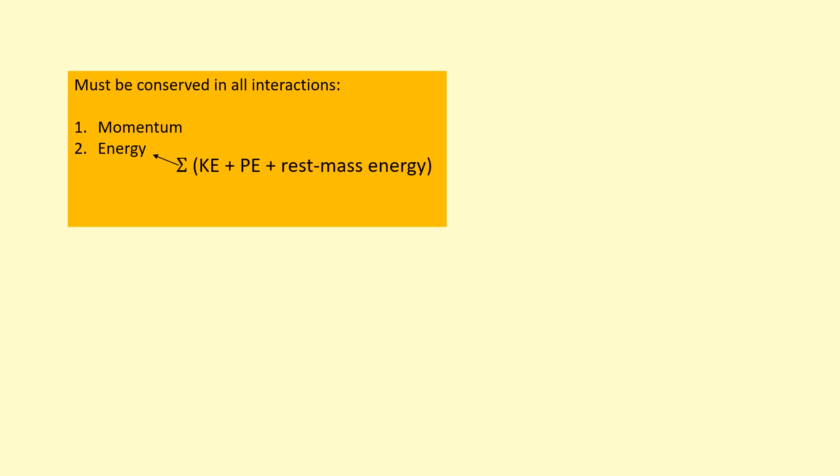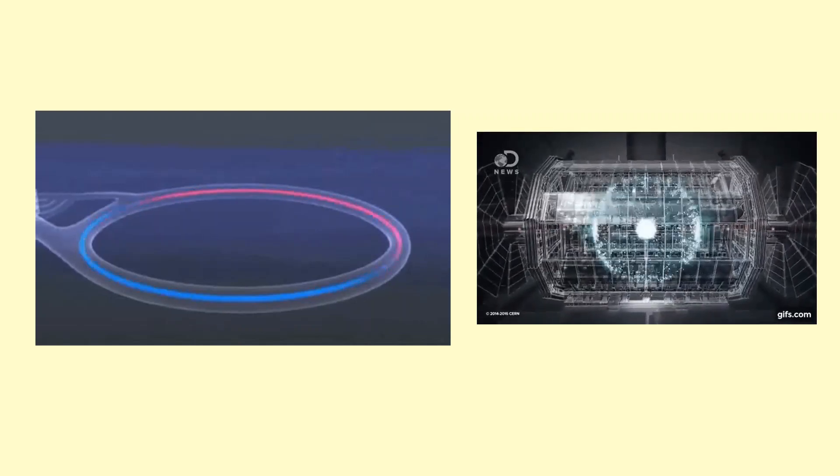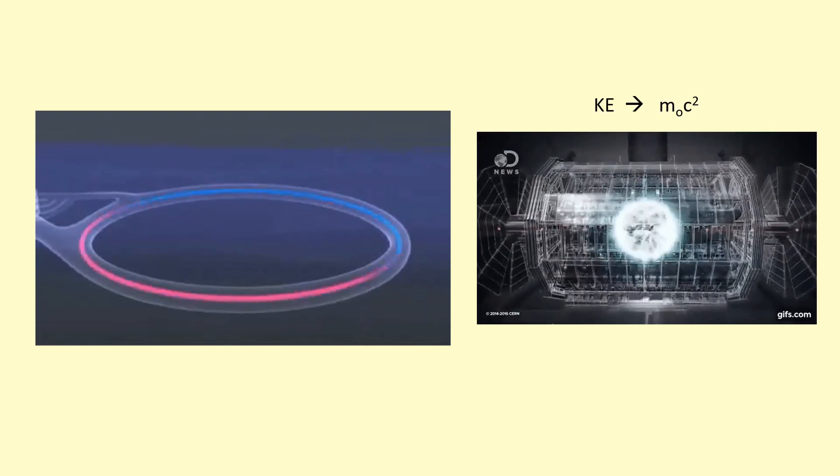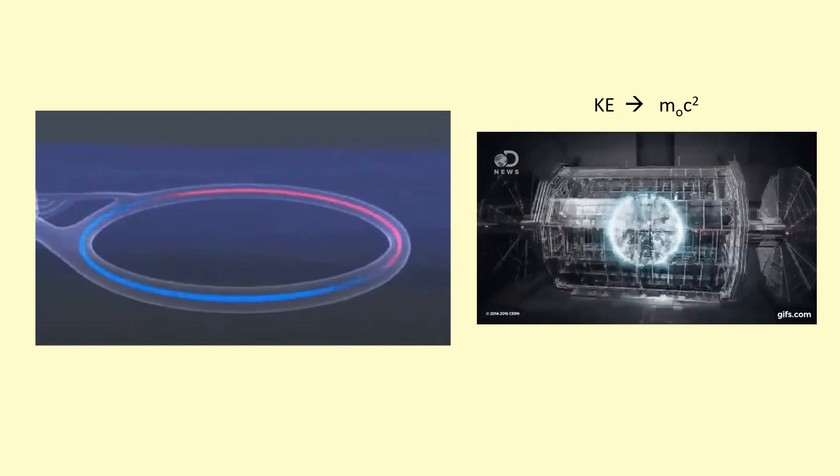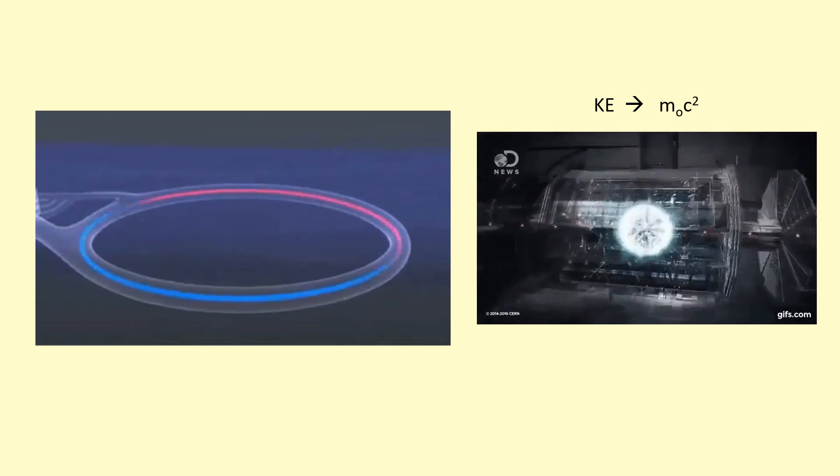When we say energy, we're talking about the total of kinetic energy, potential energy, and rest mass energy as well. We can speed up particles to a very high speed so they have a lot of kinetic energy, then smash these particles together — for example in particle colliders. The kinetic energy of the colliding particles can be used to make new particles, converting kinetic energy into the rest mass energy of these new particles.